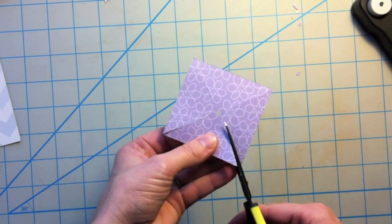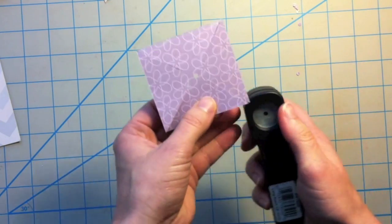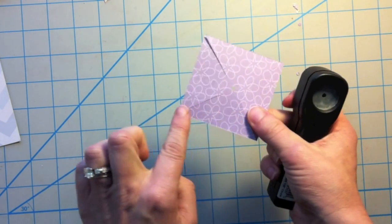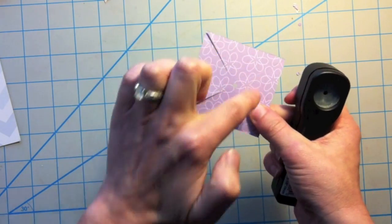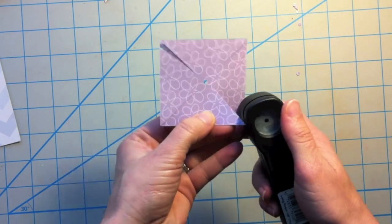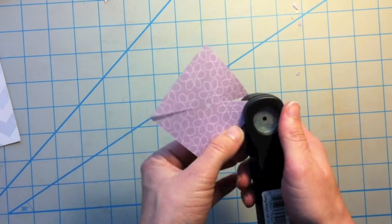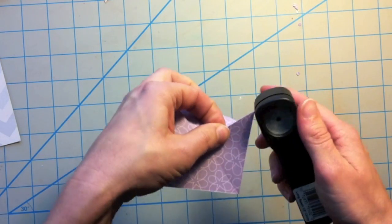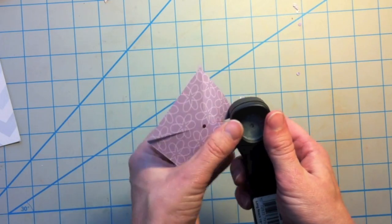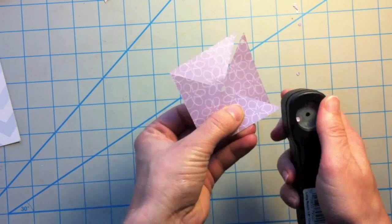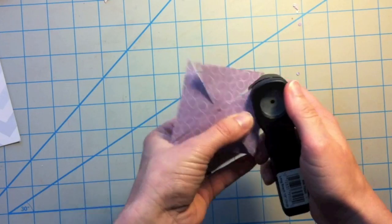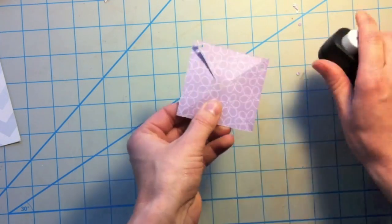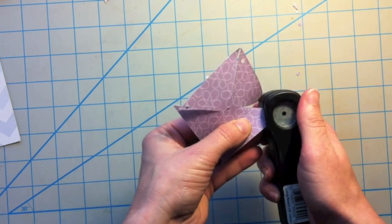And then I'm going to take the hole punch and you have four sections there and on each section you need to punch a hole down at the bottom. Now it doesn't matter which corner you do, but you do have to be consistent with all four corners. So I'm going to punch holes in the bottom right of all four of these sections. And just try to line it up as best you can because if you punch off the page then you lose your hole and it's hard to feed a brad through it.